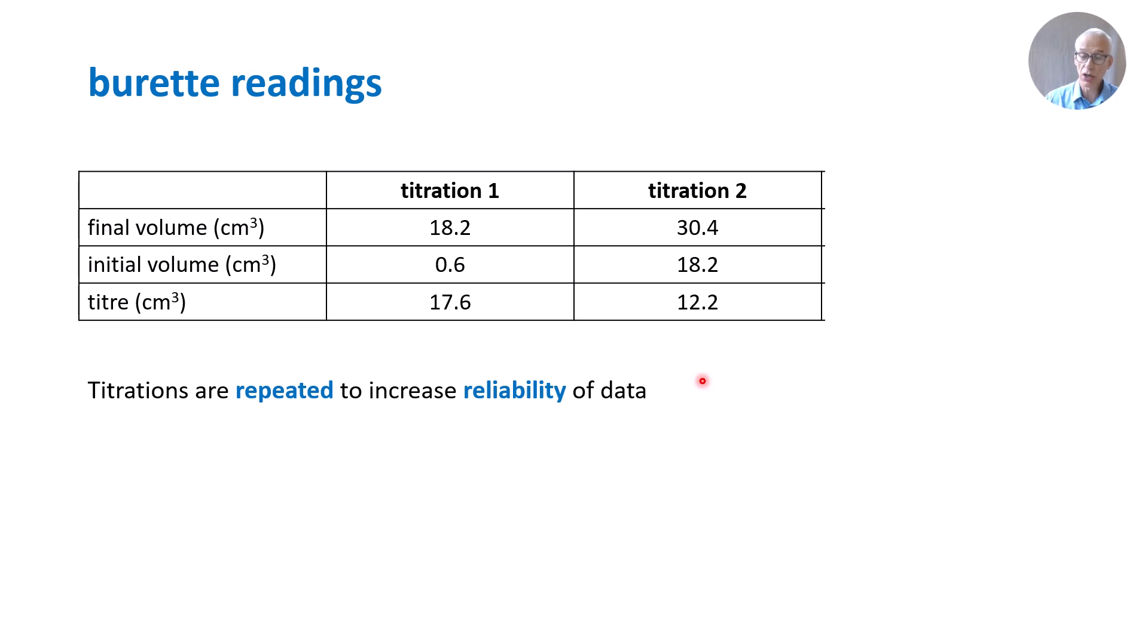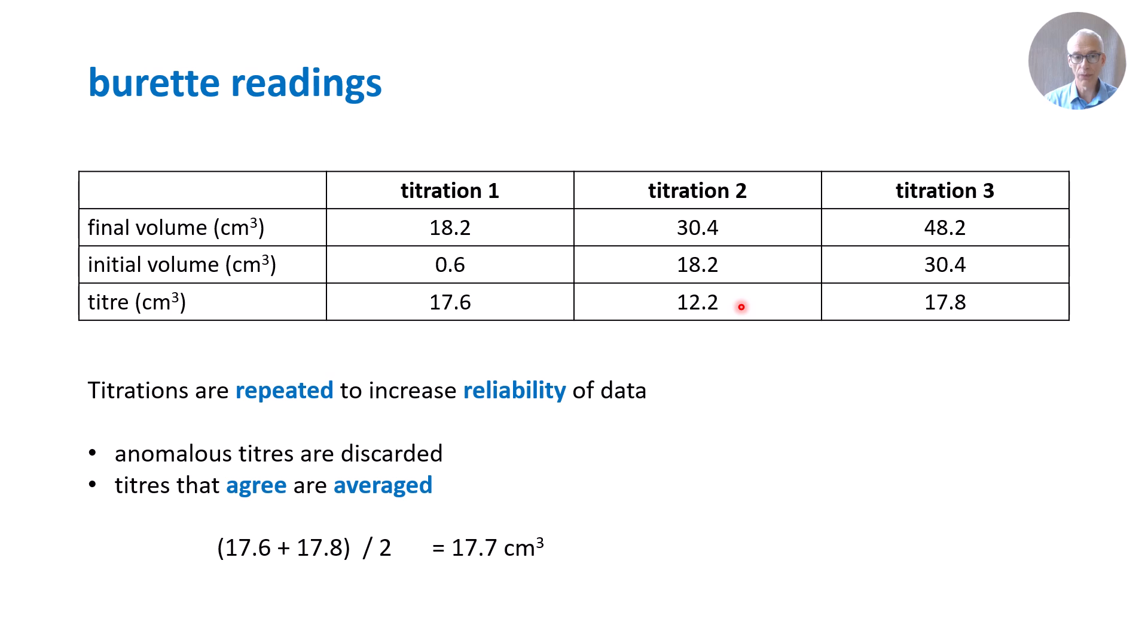However, titrations are repeated to increase reliability of data. I haven't seen a question like this in the most recent papers, but it's definitely a fair examination question according to the specification. We might repeat titration two, starting again the initial volume 18.2, final 30.4. That wouldn't be in agreement, so we would need to carry out a third titration. Starting at 30.4, we deliver to achieve a final result of 48.2, which means the volume delivered is 17.8. Now, 17.6 and 17.8 are in quite close agreement. However, the value 12.2, we're going to ignore. It is anomalous.